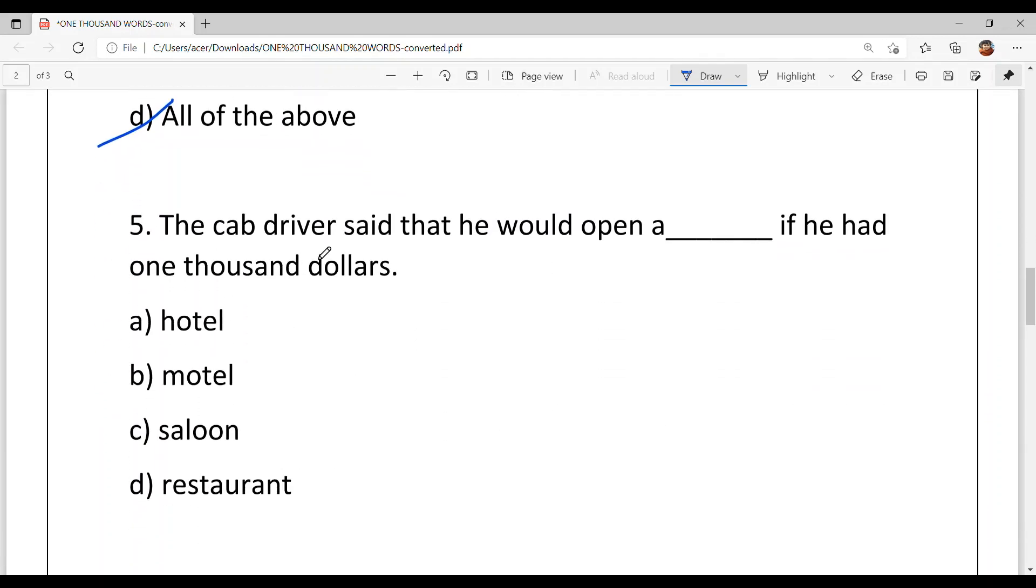Fifth, the cab driver said that he would open a dash if he had $1,000. Gillian asked the cab driver that if you had $1,000, what would you do. So the cab driver answered that he would open. A, hotel. B, motel. C, salon. D, restaurant. And option C is your answer, salon.